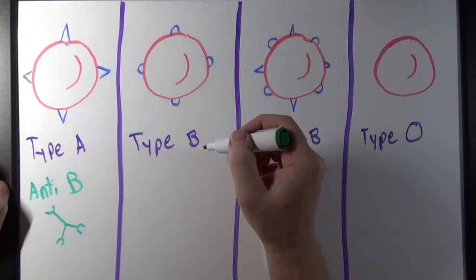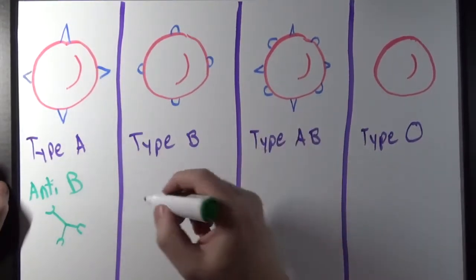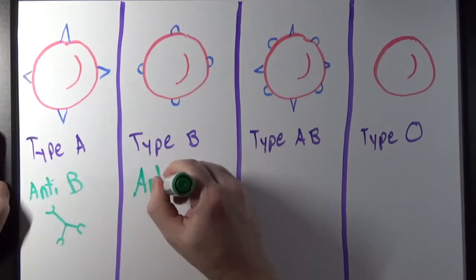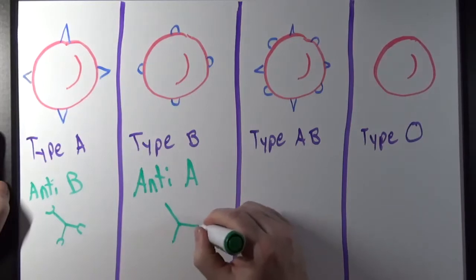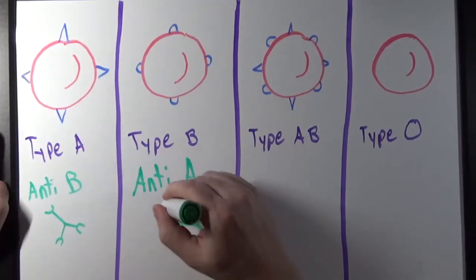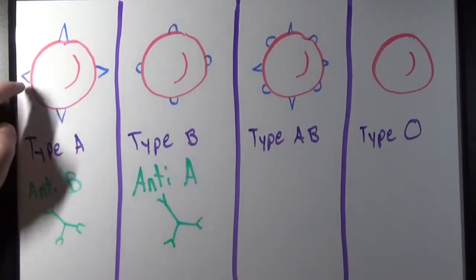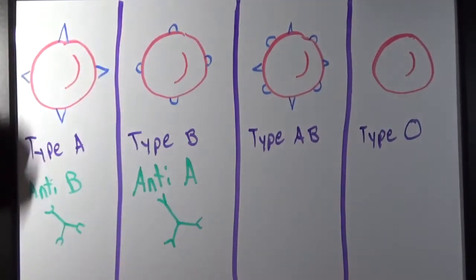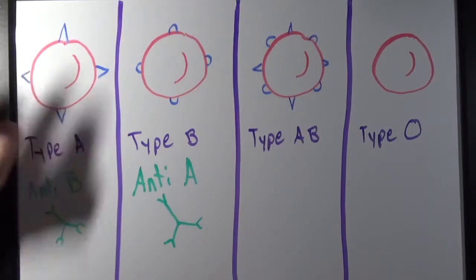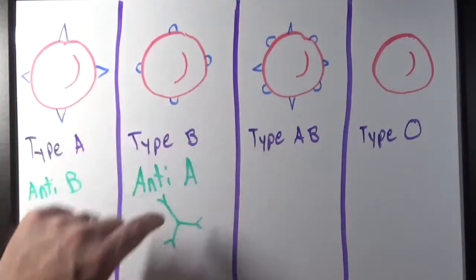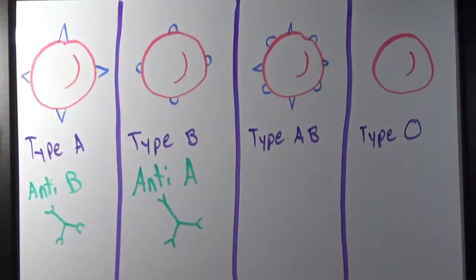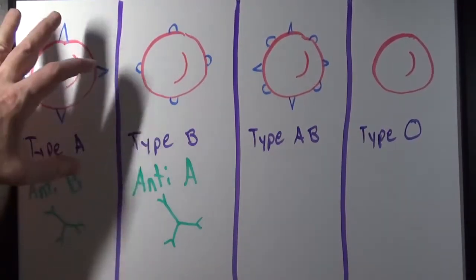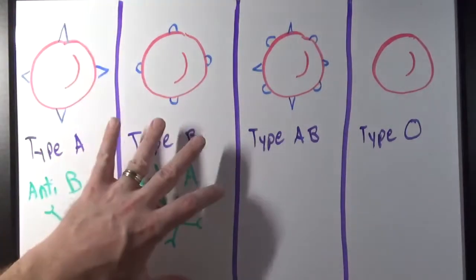A person with type B blood would have anti-A antibodies. The anti-A antibodies have pointy binding sites so they can bind to the pointy surface antigens of the type A cells. If we were to transfuse these blood cells into this person's blood, the anti-A antibodies would bind to those surface antigens, cause the cells to clump together, and promote their destruction. So we're not going to be able to transfuse type A blood cells into this person's blood.